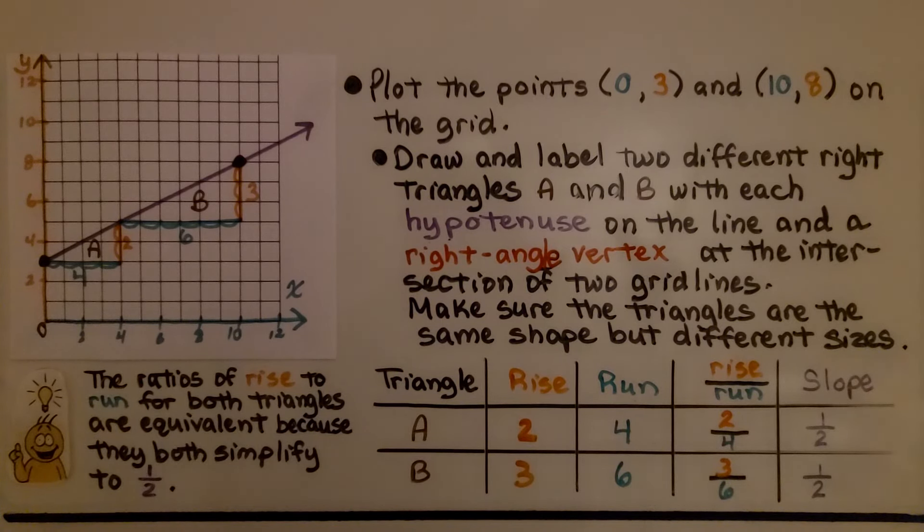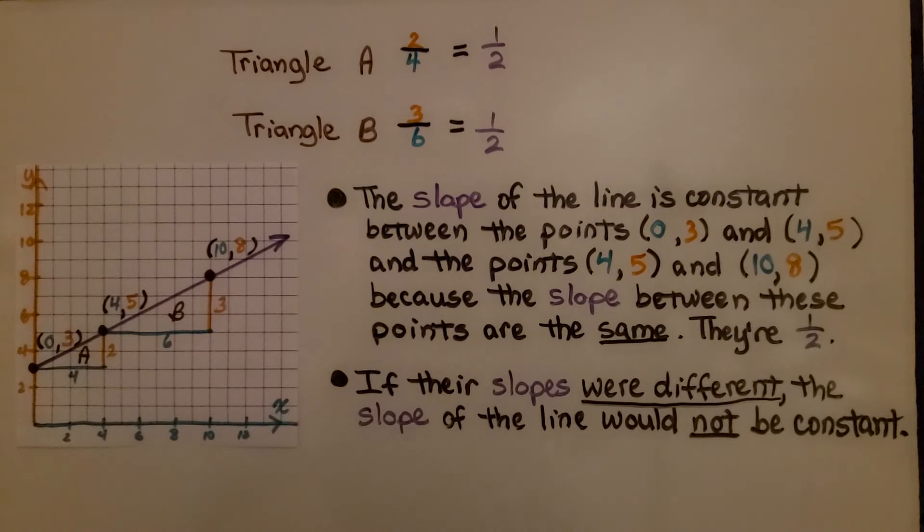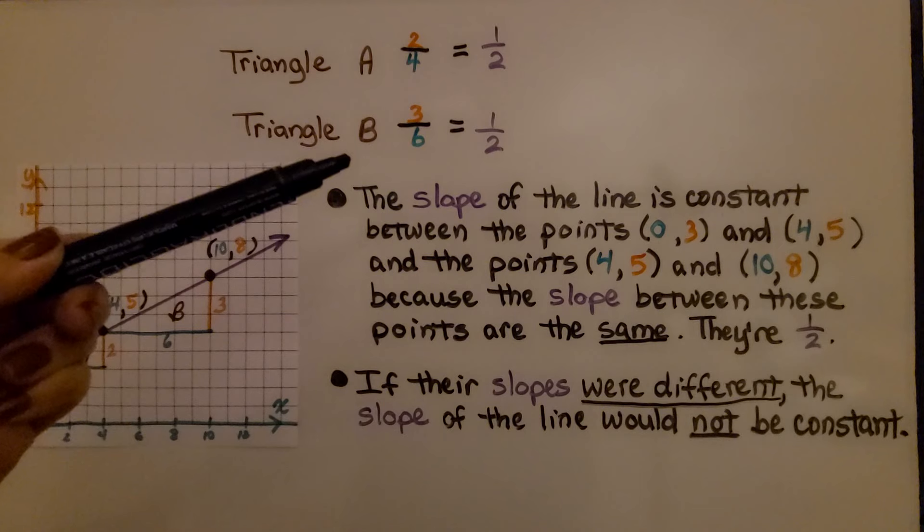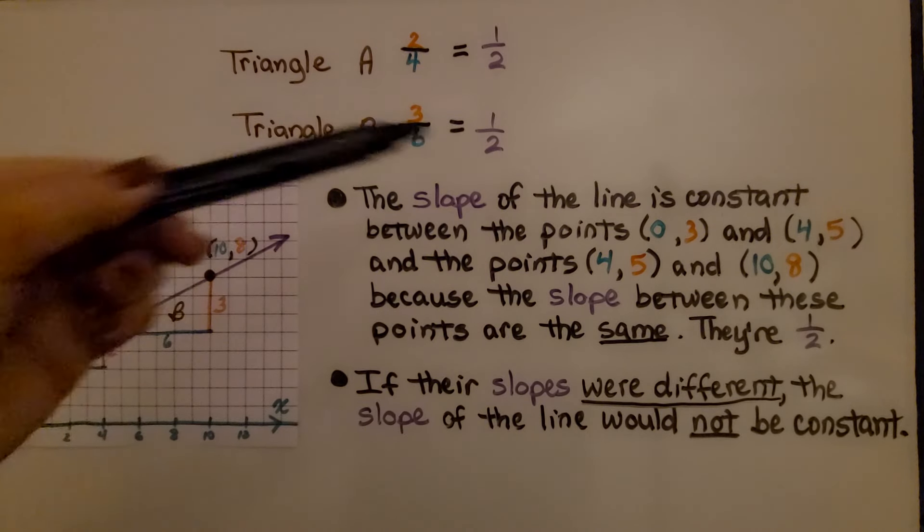The ratios of rise to run for both triangles are equivalent, because they both simplify to 1 half. For triangle A, our rise over run was 2 fourths. For triangle B, it was 3, 6. They both simplify to 1 half.